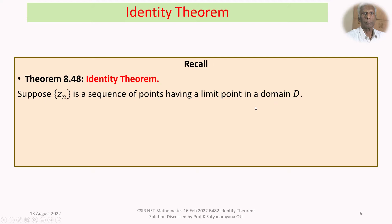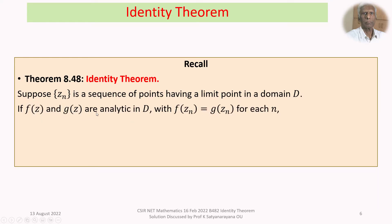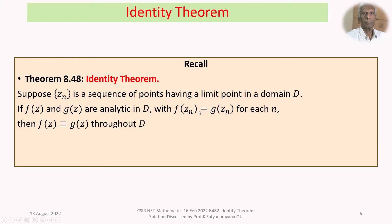Suppose Z_n is a sequence of points having a limit point in a domain D. If F of Z and G of Z are analytic in D and they coincide at each Z_n — that is, F of Z_n equals G of Z_n for each n — then F of Z is identically equal to G of Z throughout D, meaning for all Z belonging to D.